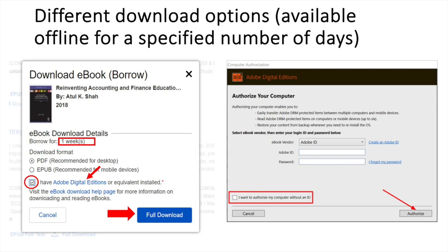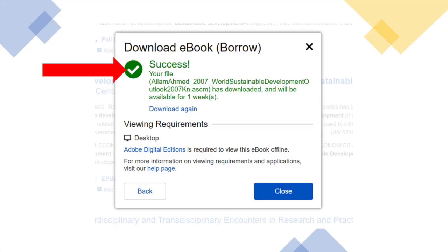If you do not have this software installed, please click on the Adobe Digital Editions link in blue and follow the prompts to download the software. Please note that in some instances you might be prompted to authorize your computer. Once that is done, click on the 'I have Adobe Digital Editions' checkbox, then click on Full Download. You will get a notification that you have borrowed the eBook for a specified number of days.